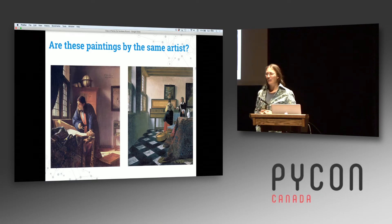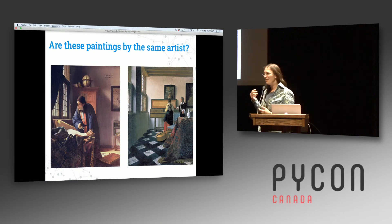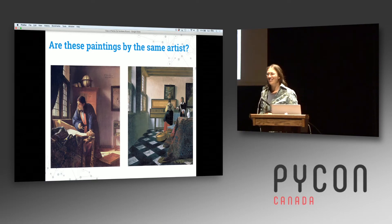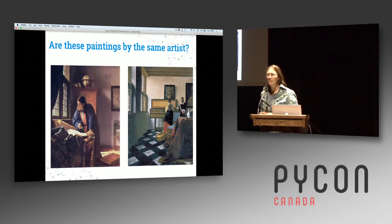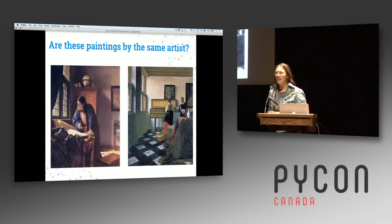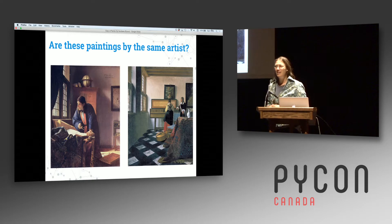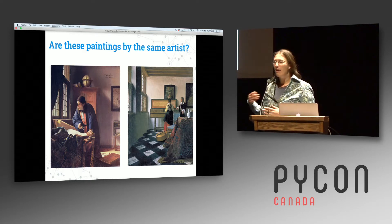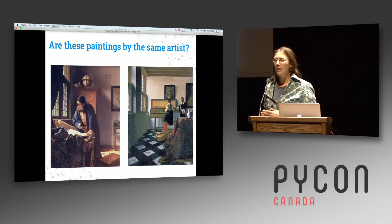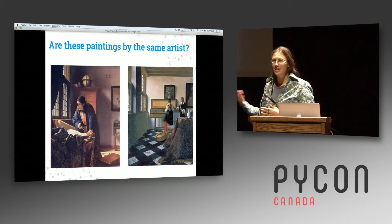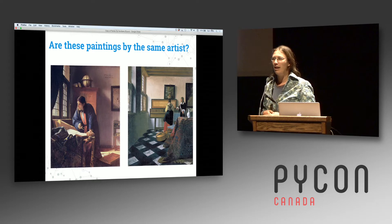Here's a really interesting problem: are these two paintings by the same artist? And an even more interesting problem is can you get a computer to make that decision? Can you get the computer to make that decision just by having it look at thousands of paintings and telling it this painting is by one artist and this painting is by another artist? Can the algorithm learn by examining a whole bunch of paintings to tell whether two paintings are by the same artist?